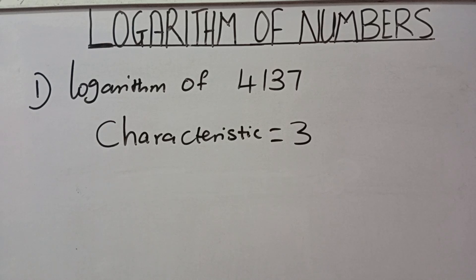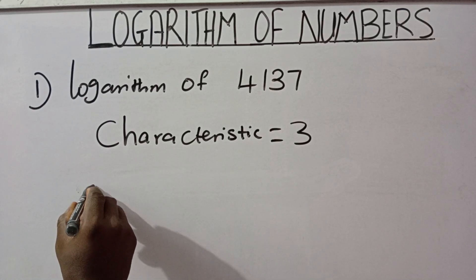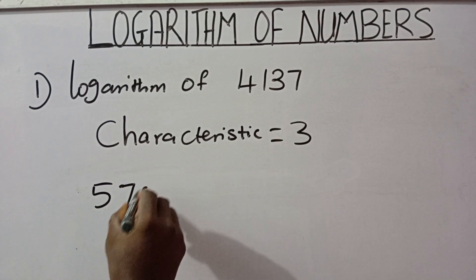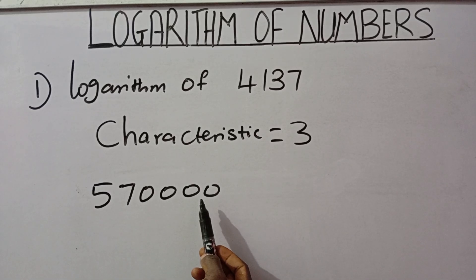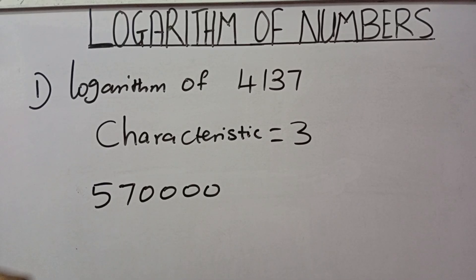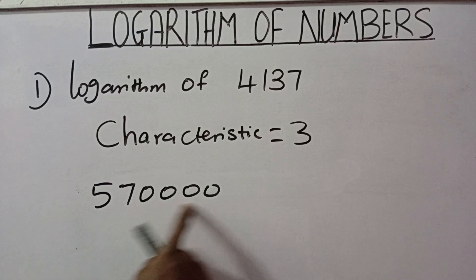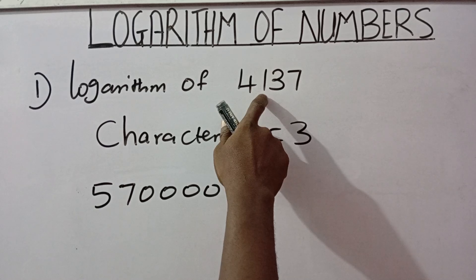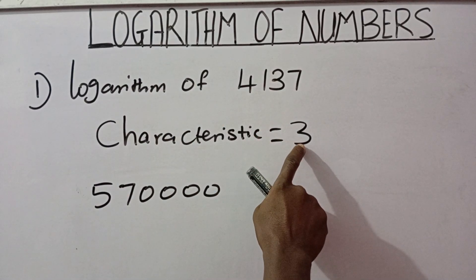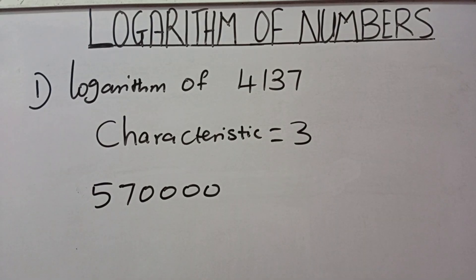The simplest way to identify the characteristic is by counting the number of digits in the whole number part and subtracting 1. For example, if we have 570,000, we count 1, 2, 3, 4, 5, 6 — that's 6 digits. 6 minus 1 equals 5, so the characteristic is 5. If you press the logarithm of this in your calculator, the answer will start with 5.